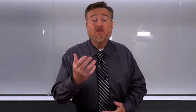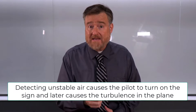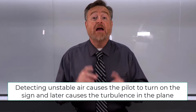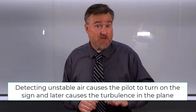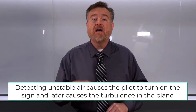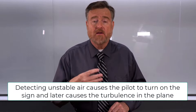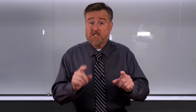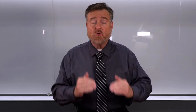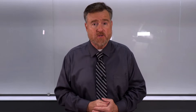However, the reason why this is funny is because we know that both the turning on of the seat belt sign and the turbulence is caused by a third variable. This is why correlation does not imply causation. There may be a third variable at play that explains the relationship between the first two variables.